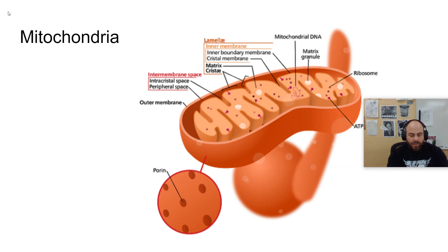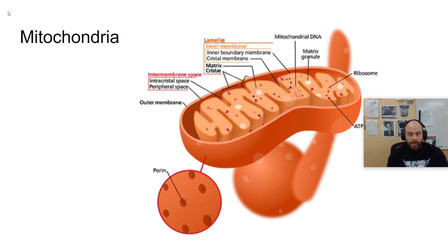Here we have the mitochondria, which we talked about a little in the last video. The mitochondria has a double membrane, which provides different compartments for different kinds of reactions and a higher surface area to volume ratio, increasing the organelle's efficiency. The mitochondria takes carbohydrates like glucose made in photosynthesis and breaks them down to make ATP. It can also take proteins and fats and break them down to create ATP. One of the processes occurs in the inner chamber of the mitochondria, called the matrix.